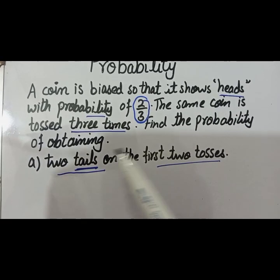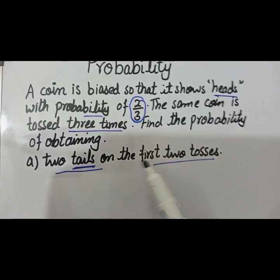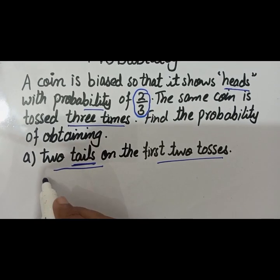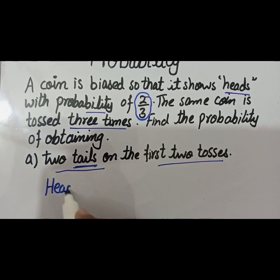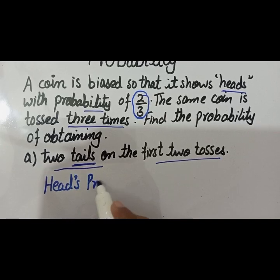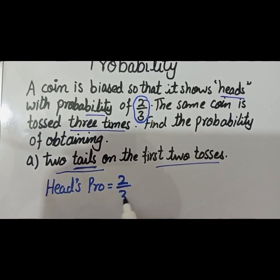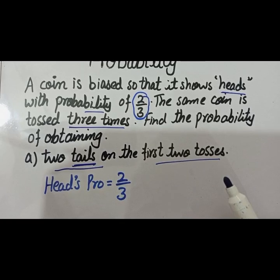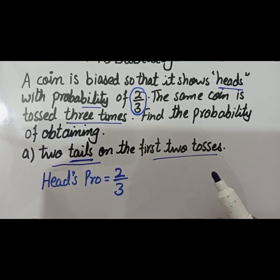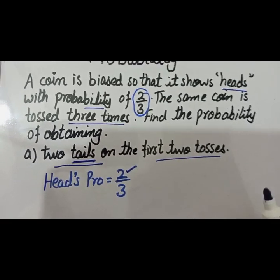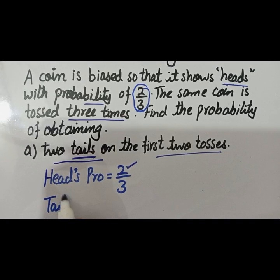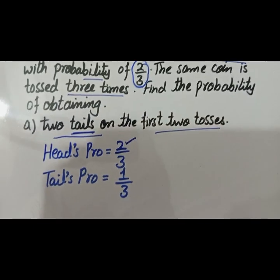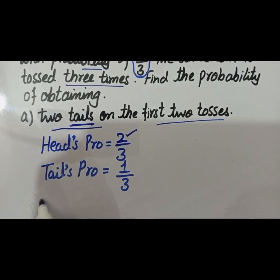The statement is given for head but the question is asked for tail. So first of all, write the probability of heads, which is given as 2 by 3. This means the total sample space is 3 — out of 3, two are heads. So the probability of tail is simply 1 by 3, since only one out of three outcomes remains.